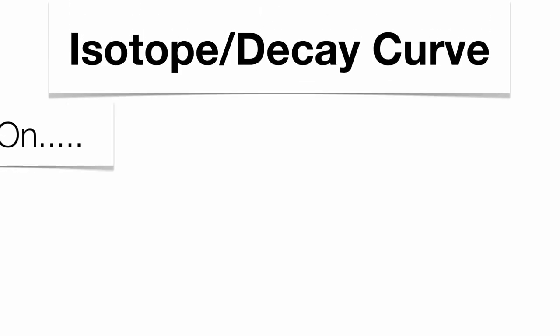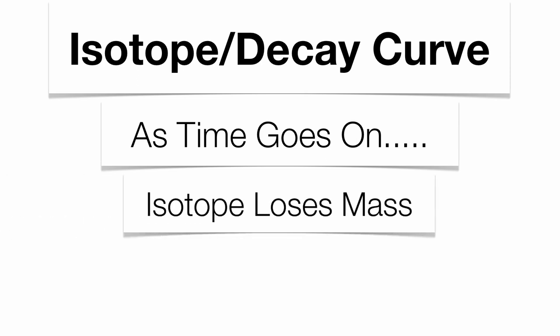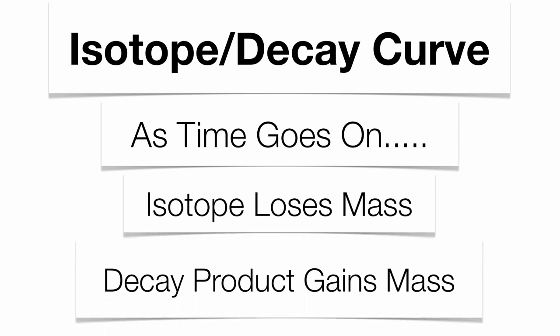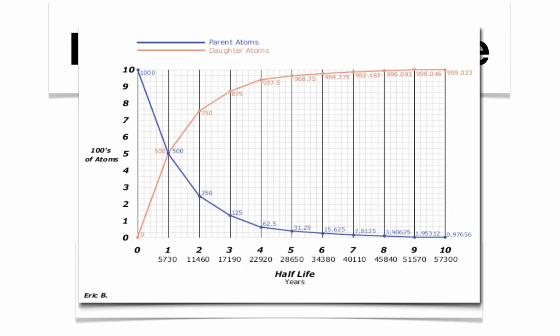What's going to be very important here is to be able to identify the isotope and decay curve. So, as time goes on, your isotope is going to lose mass and your decay product is going to gain mass. When you look at those together, you can see along the horizontal is your half-lives. One half-life, two half-lives, three half-lives, and so on. And this is actually the half-life for carbon-14.